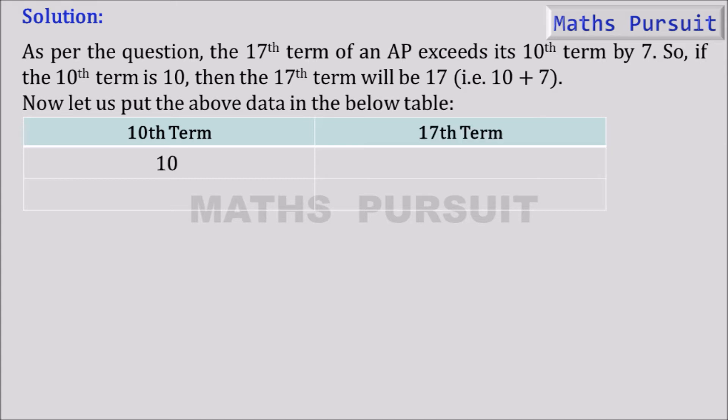Now putting 10 under 10th term, 17 under 17th term and naming a10 to 10th term and a17 to 17th. Just naming a10 and a17 so that it will be easy while calculating the equations.